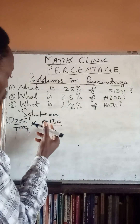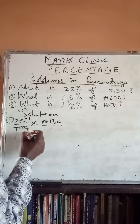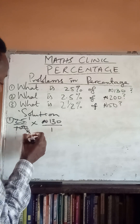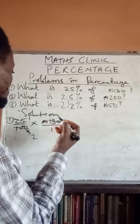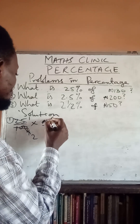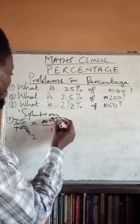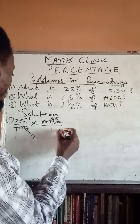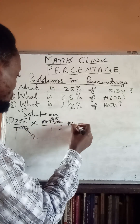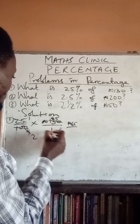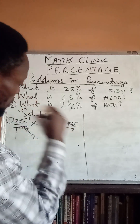2 is also common — 2 can divide 130 because 130 is an even number, and 4 is also even. So 2 into 4 gives 2, and 2 into 130 gives 65. So we have 1 times 65 naira over 2 times 1, giving 65 naira over 2.